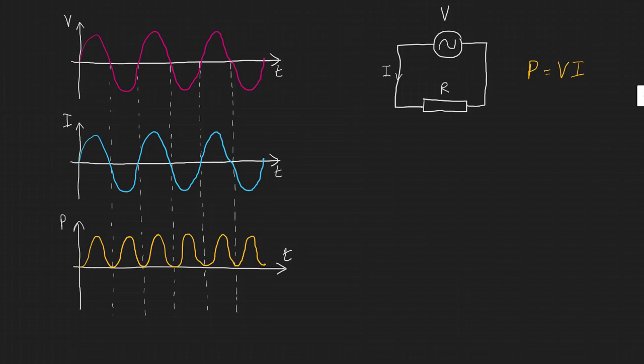We can draw a line through the middle of this graph to represent the average power dissipated by our resistor. It is at half the peak value of the power, so P mean the average power is equal to P0 the peak power divided by 2.